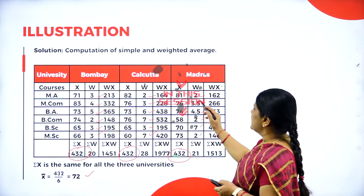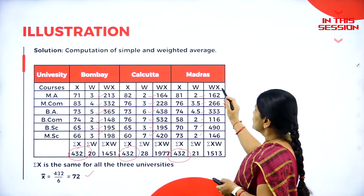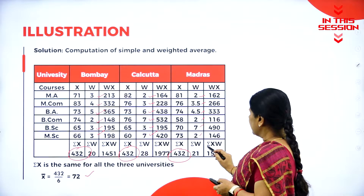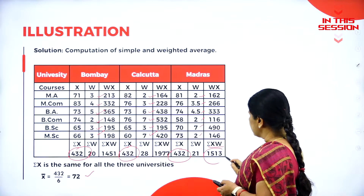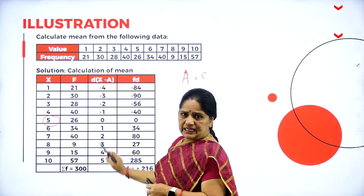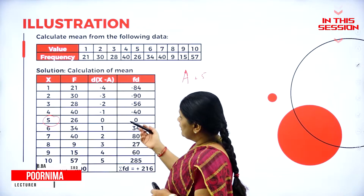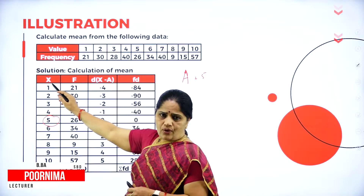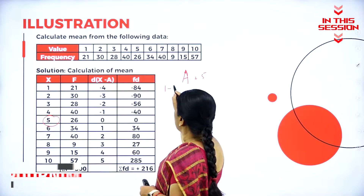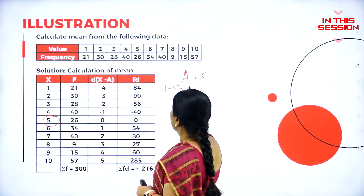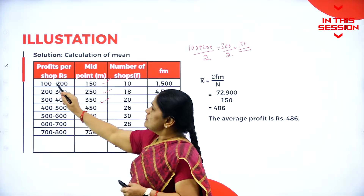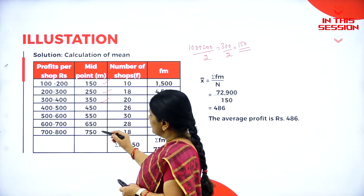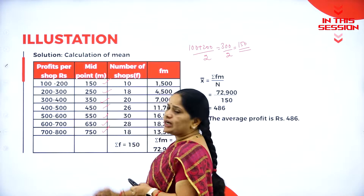When we have the different weights assigned for each of these courses, we get x into w (wx), so we get different values here. I have to find out the d values — x minus a. What is x here? 1, so 1 minus 5 equals minus 4. Whatever is the difference between the class interval, the same difference we will be finding in the midpoint also.